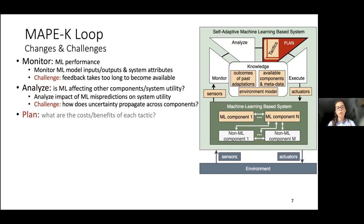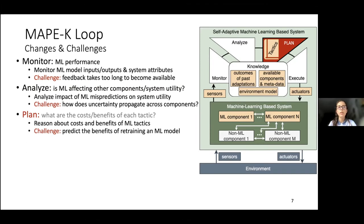Moving on to plan: the plan component is responsible for determining which action the system should perform to self-adapt. In this particular case of machine learning components, we need to reason about the costs and benefits of the machine learning adaptation tactics. This is challenging because the benefits of, for instance, the retrain tactic are not that predictable. If you think about retraining a machine learning model for 10 minutes versus one hour, you are likely to get different results. Similarly, retraining with different sets of data for the same amount of time can also yield different accuracies.